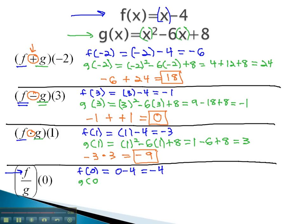g of 0 is equal to x squared, or 0 squared, minus 6 times 0, plus 8. Working this out, we can see the answer is 8.